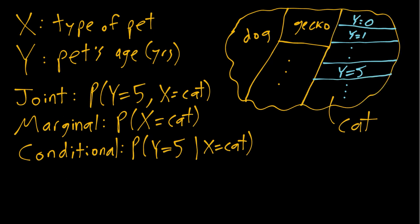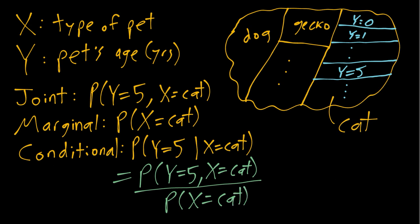And thankfully there's also a handy formula we can use for this, where this conditional probability here is equal to the joint probability of a five-year-old cat divided by the marginal probability of cat. So that represents what we were just drawing in the picture: the numerator is this joint probability of a five-year-old cat and the denominator is this cat subpopulation. So that's where that formula comes from, and if we add numbers we could plug those in.